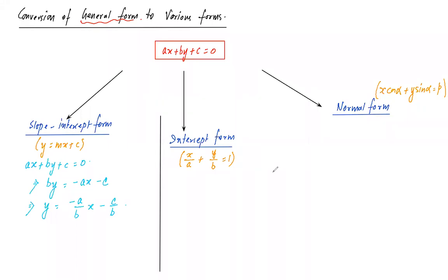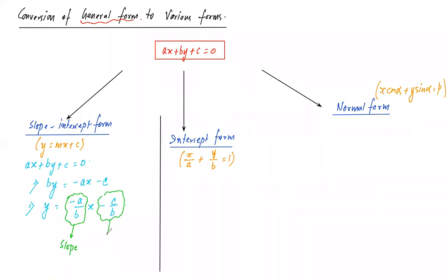To convert to intercept form: start with ax + by + c = 0, shift the constant to the right giving ax + by = −c, then divide the entire equation by −c to make the right-hand side equal to 1. This gives x/(−c/a) + y/(−c/b) = 1. So the x-intercept is −c/a and the y-intercept is −c/b. Notice the y-intercept −c/b matches what we found from the slope-intercept form.